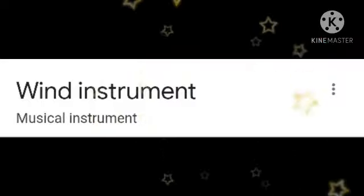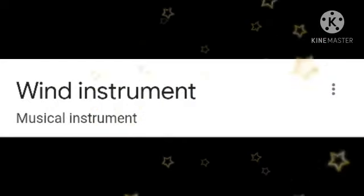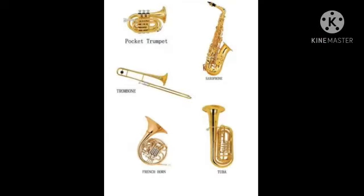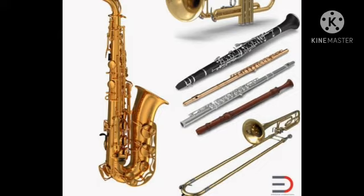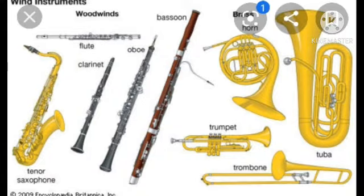The last type is wind instruments. In these instruments, air is set into vibration in a resonator within the instrument, and this produces sound. Examples include the mouth organ, shehnai, bansuri, and many other instruments in which you use air to produce sound.